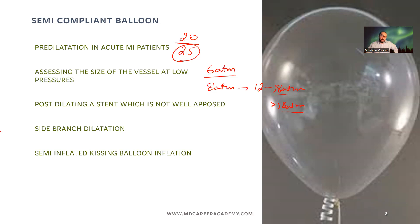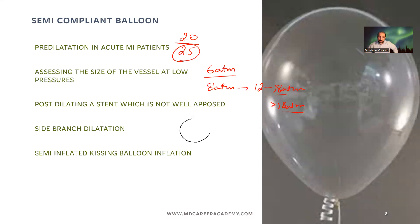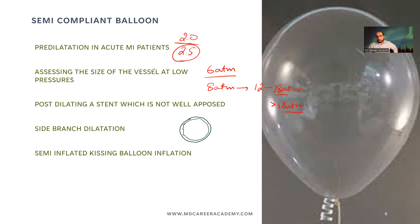You can also use the semi-compliant balloon for post-dilating a stent that is not fully well-apposed. Most people use a non-compliant balloon for that; however, if the stent is simply not touching the endothelium, you do not need an NC balloon — a semi-compliant or compliant balloon can be used to expand it and get it to the endothelium.